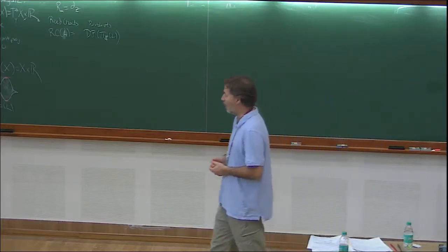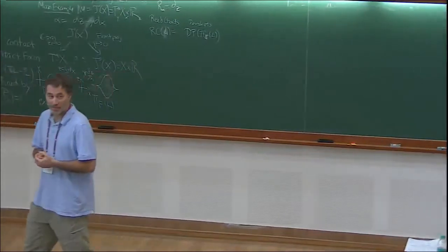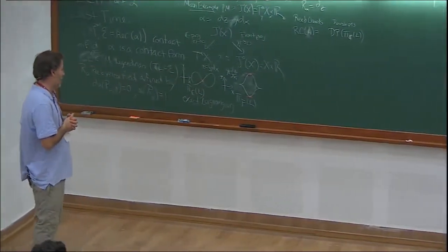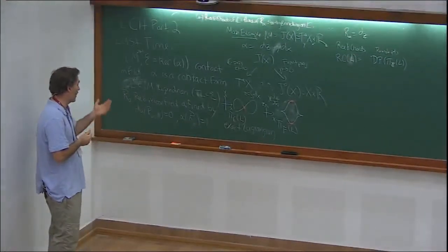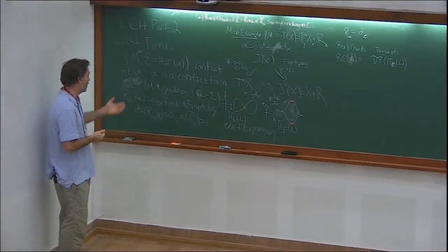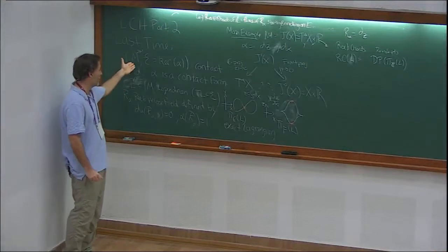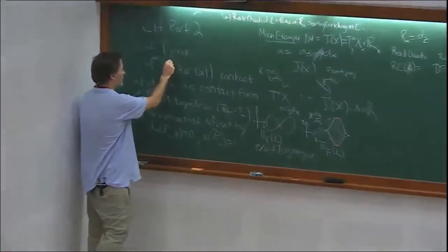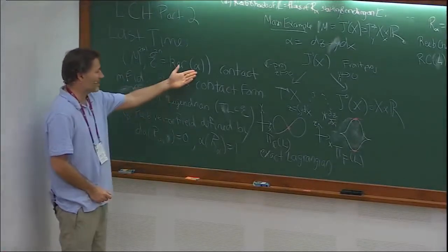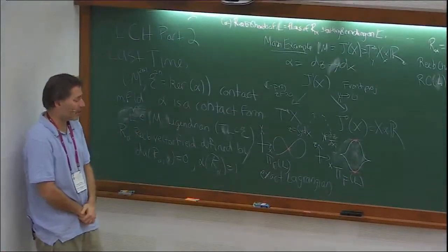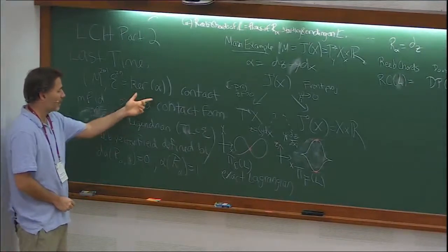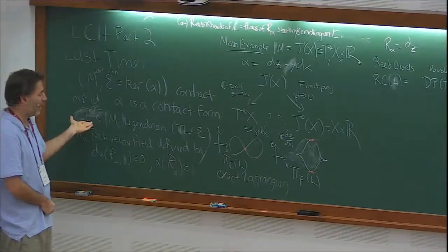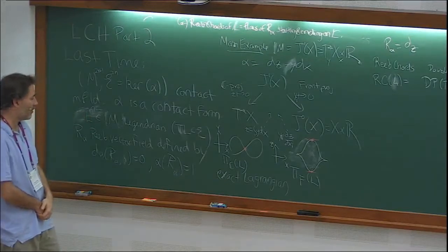So this is the stuff I need from last time. Our setup is a contact manifold, which is a pair: an odd-dimensional manifold and a distribution — a two-N-dimensional distribution. It's convenient to choose a contact form for the discussion. The contact form is not unique. I'll use L to denote a Legendrian submanifold.